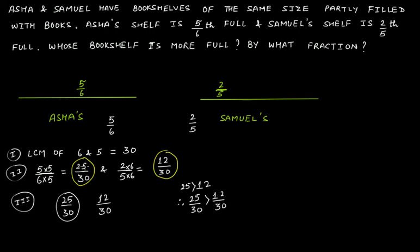Since 25/30 was the equivalent fraction of 5/6, and 12/30 is the equivalent fraction of 2/5, that means 5/6 is greater than 2/5. So Asha's bookshelf has more books than Samuel's bookshelf.